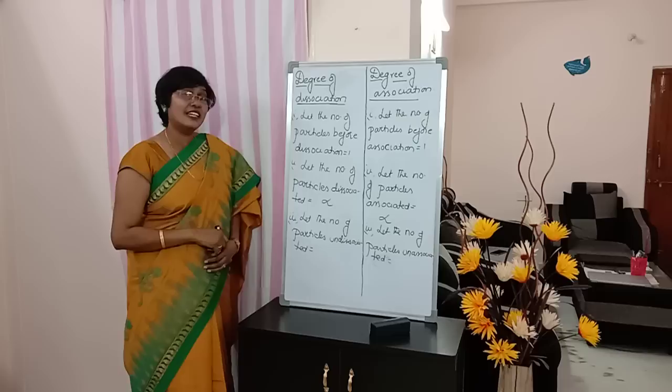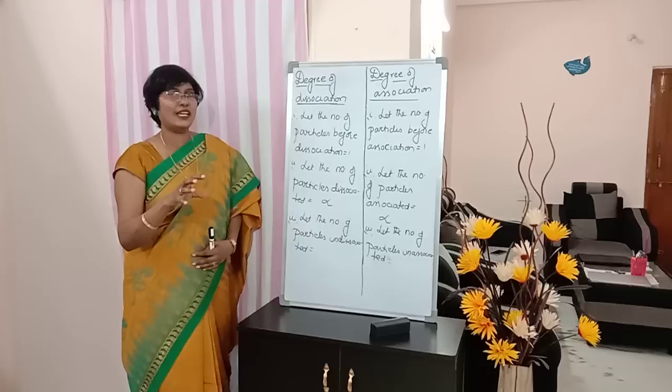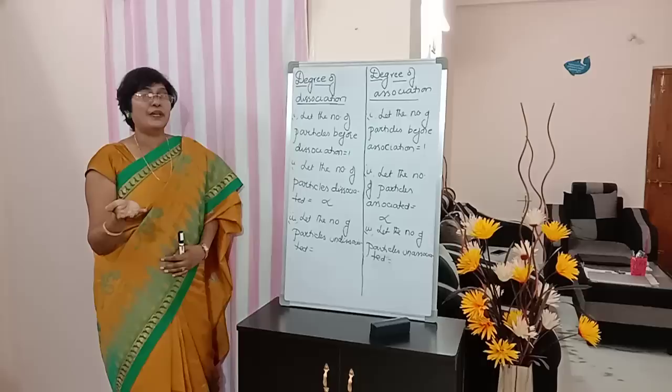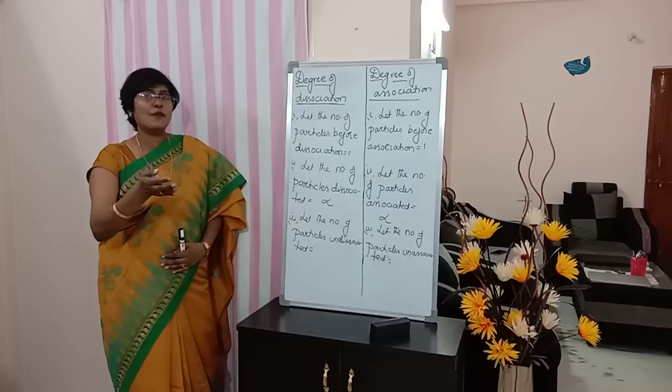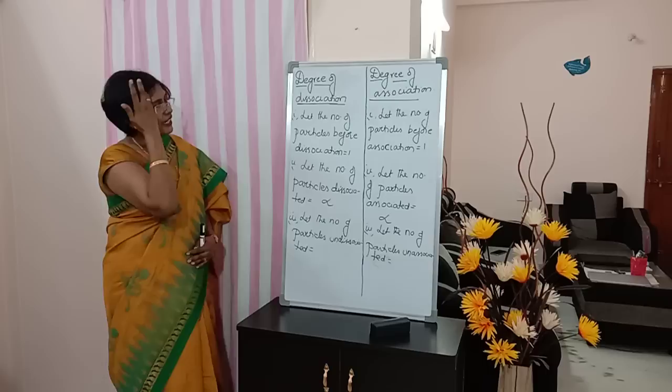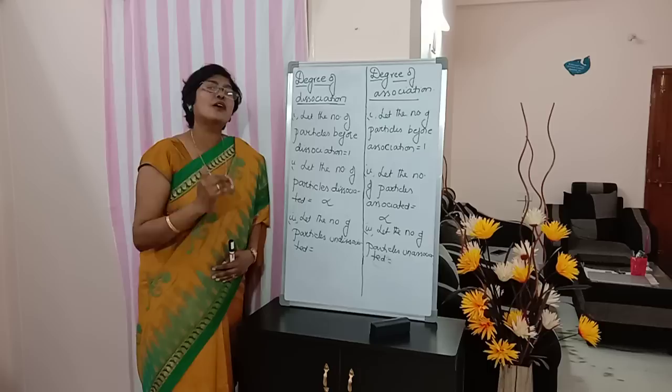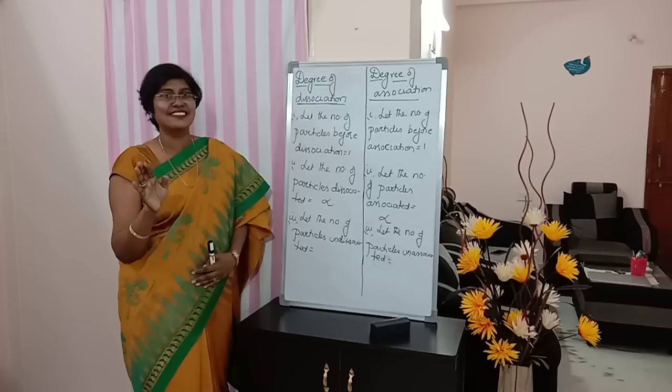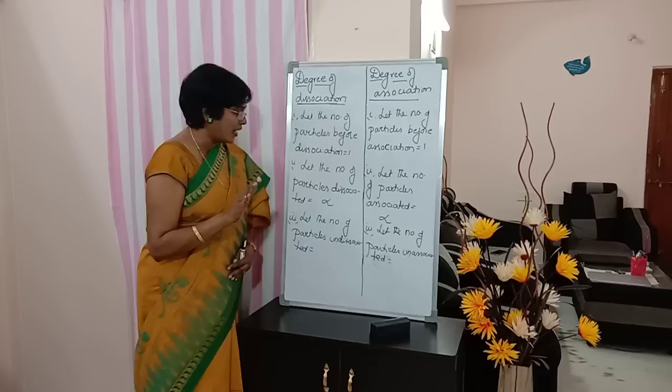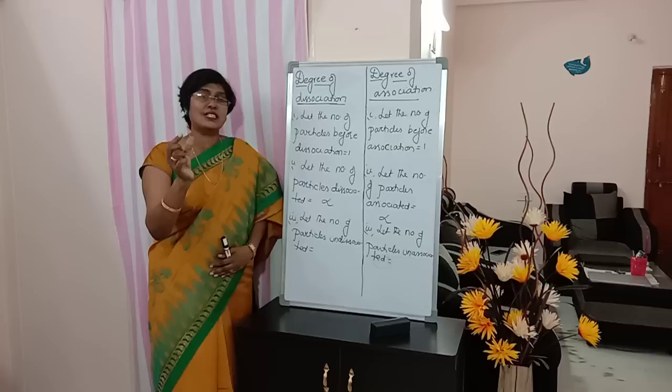Point 2: let the number of particles which are dissociated be alpha. The reaction has now started. Number of particles dissociated — let it be alpha. Similarly, on the right side, let the number of particles associated also be alpha. Point 3: the number of particles left undissociated will be 1 minus alpha.